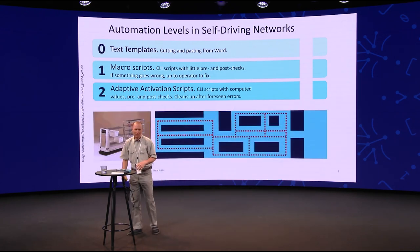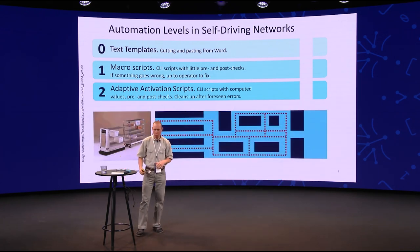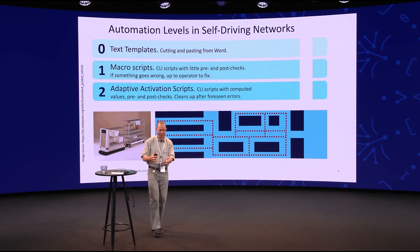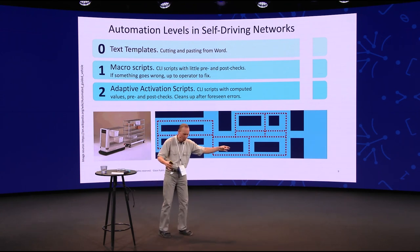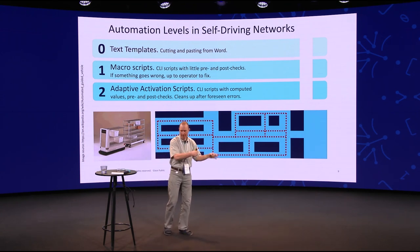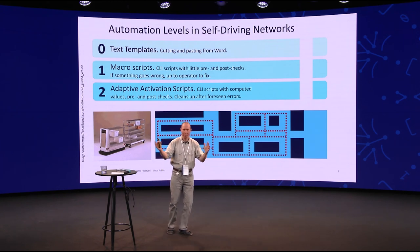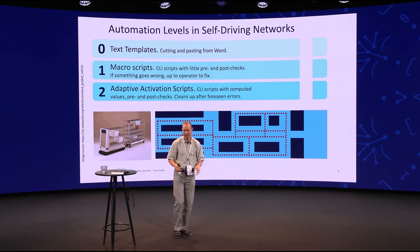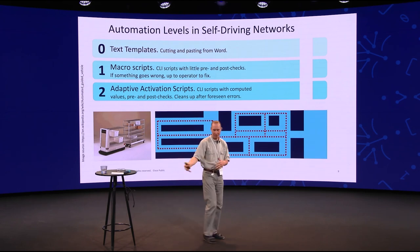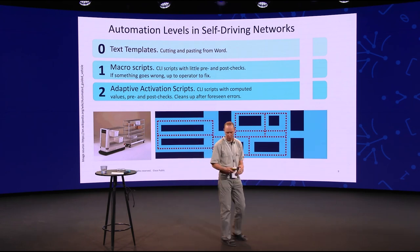I would compare level two to self-guided vehicles that have some sort of tracks in the floor — they can follow this, and if somebody stands in the way, they will slowly stop and beep a little bit. This is level two automation for networks.